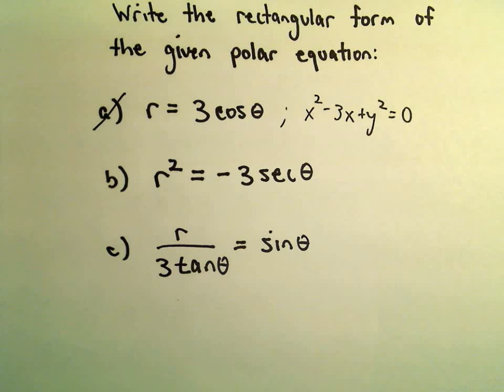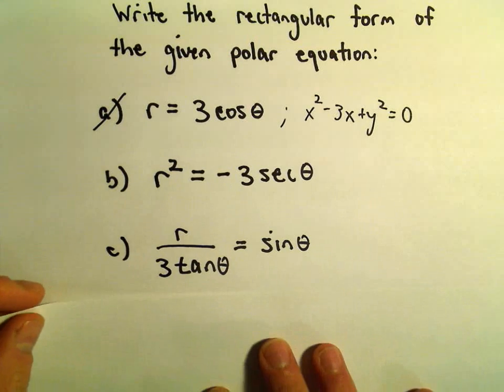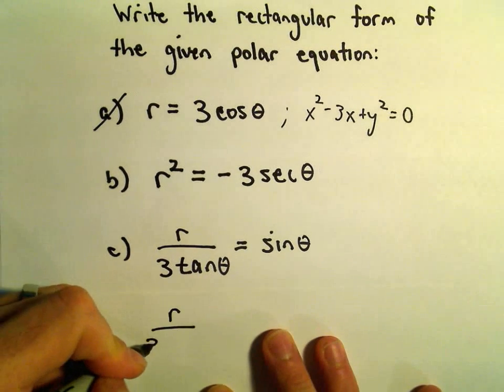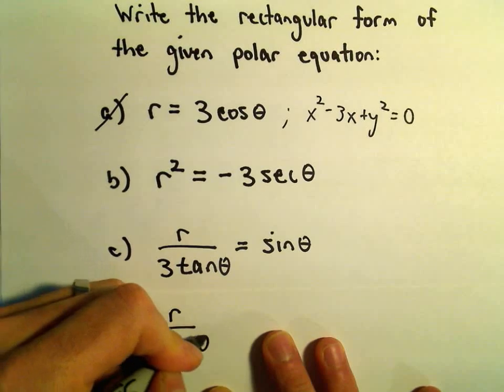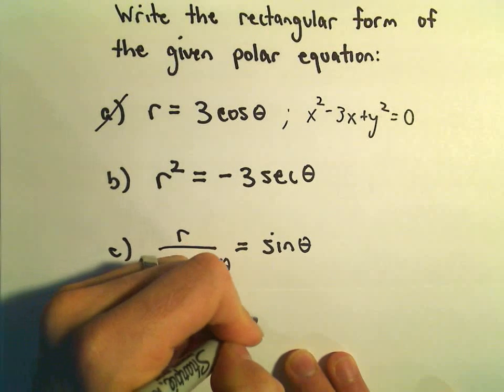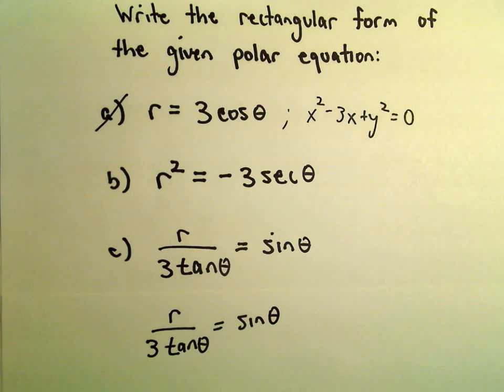We've got r/(3tan(θ)) = sin(θ). So on this one, the first thing I'm going to do, well, let's just jot it down here. So there's a couple different things that we can do here immediately. I think one thing that I'll do is, I see an r on the left, that's fine.